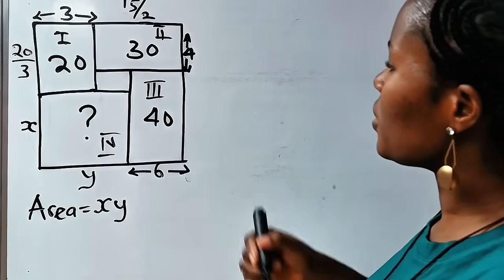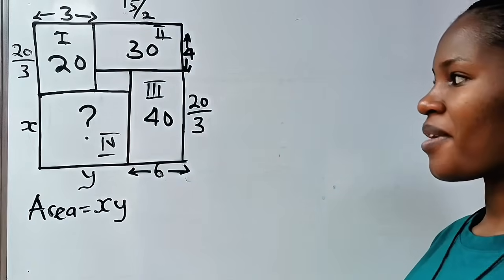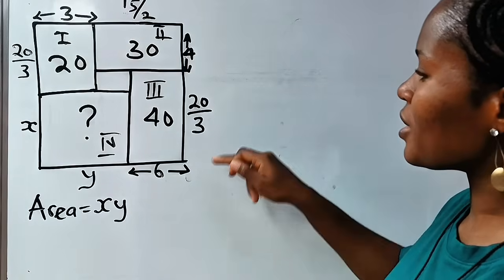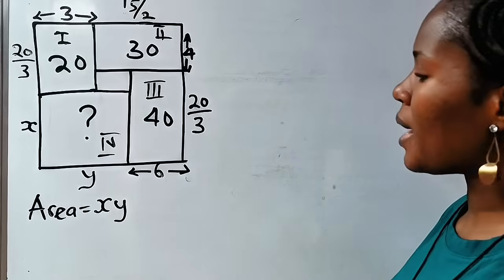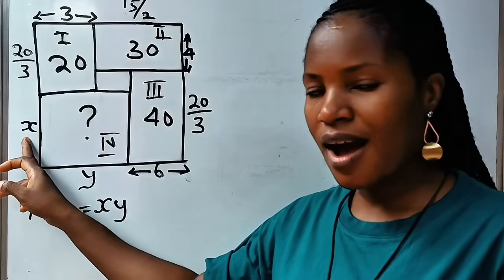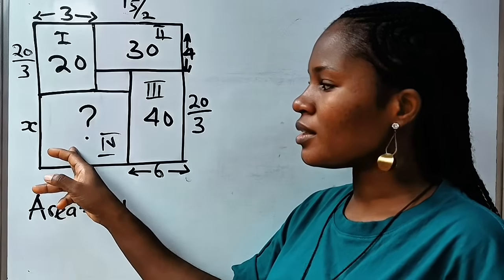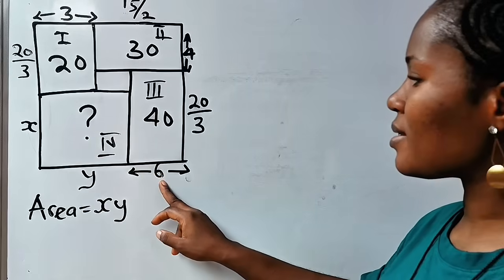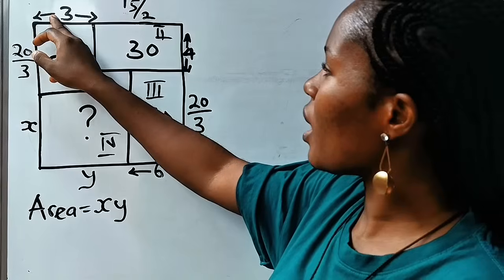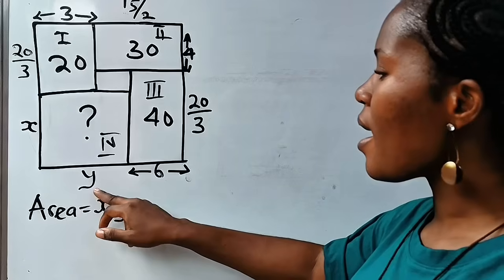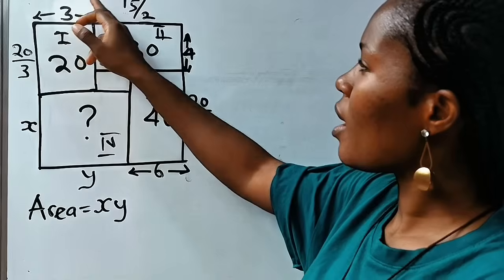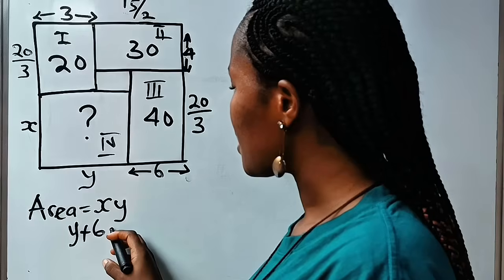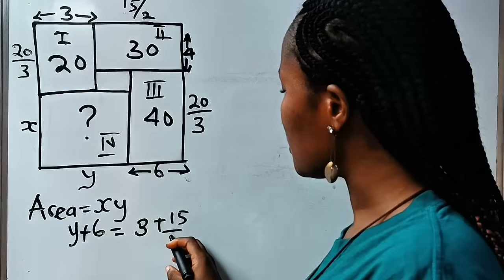We got 20 over 3 for c, so we write 20 divided by 3. Now, what are we trying to derive? We need the value of x and the value of y to find the area of the target rectangle. Remember that y plus 6 should be equal to 3 plus 15 over 2. So we have y plus 6 is equal to 3 plus 15 divided by 2.